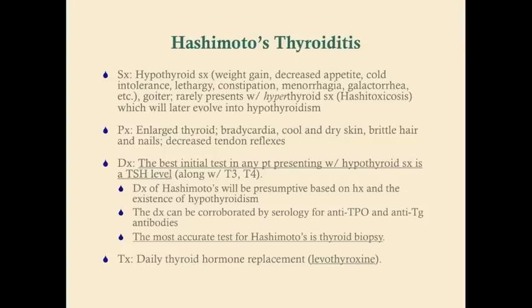For any patient presenting with hypo or hyperthyroid symptoms, the best initial test is going to be a TSH level, which will also include T3 and T4, but most importantly a TSH level. Remember that Hashimoto's thyroiditis, because it's primary, you're going to have a low T3 and T4 and a high TSH, because the disease is not in the hypothalamus or in the anterior pituitary — it's in the thyroid itself. A diagnosis of Hashimoto's will be presumptive based on your labs and history.